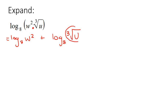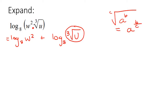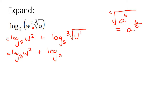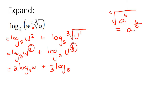The next thing I would do is get rid of this square root. Remember how to rewrite a root with an exponent: the general rule is that the exponent becomes the inside number over the outside number. So the cube root of u becomes u^(1/3). Now we have exponents, so those go to the front: 2·log₈(w) plus (1/3)·log₈(u).